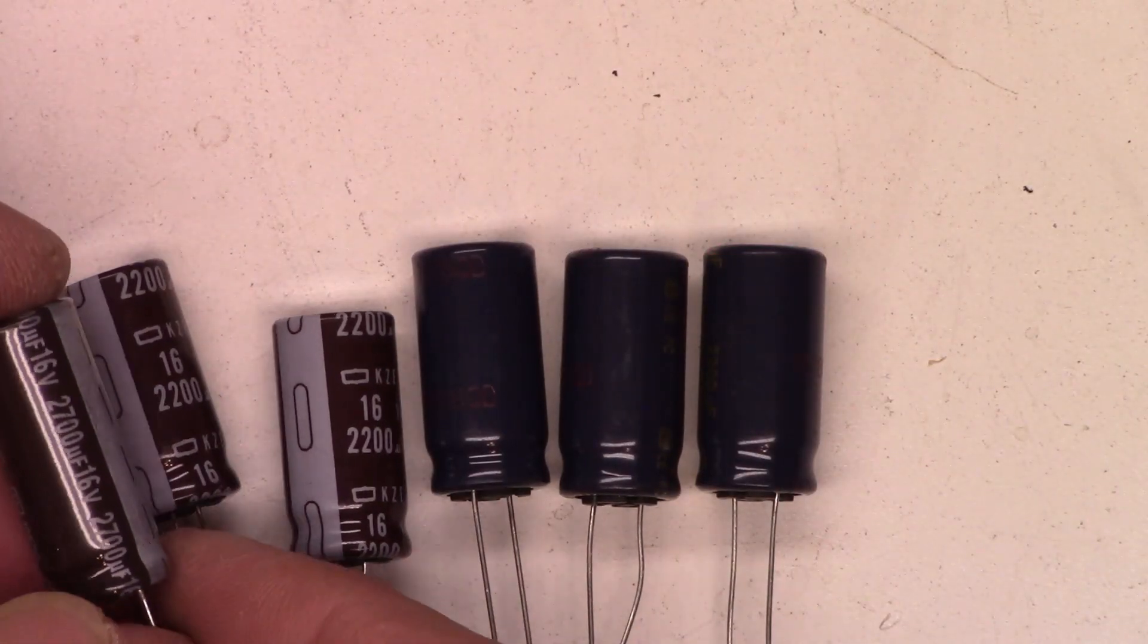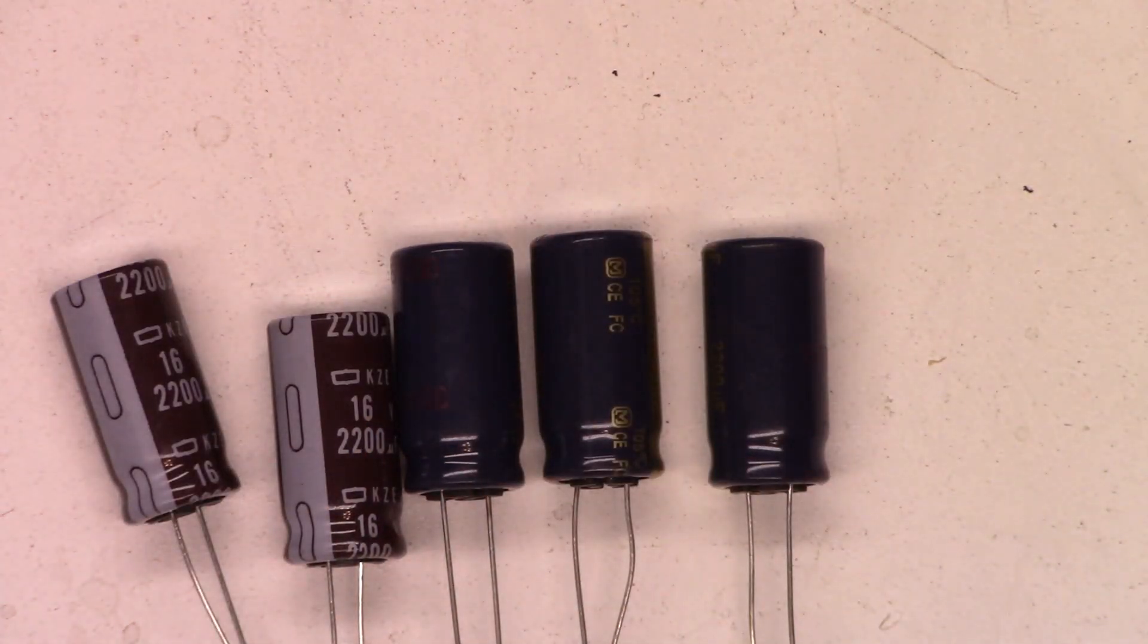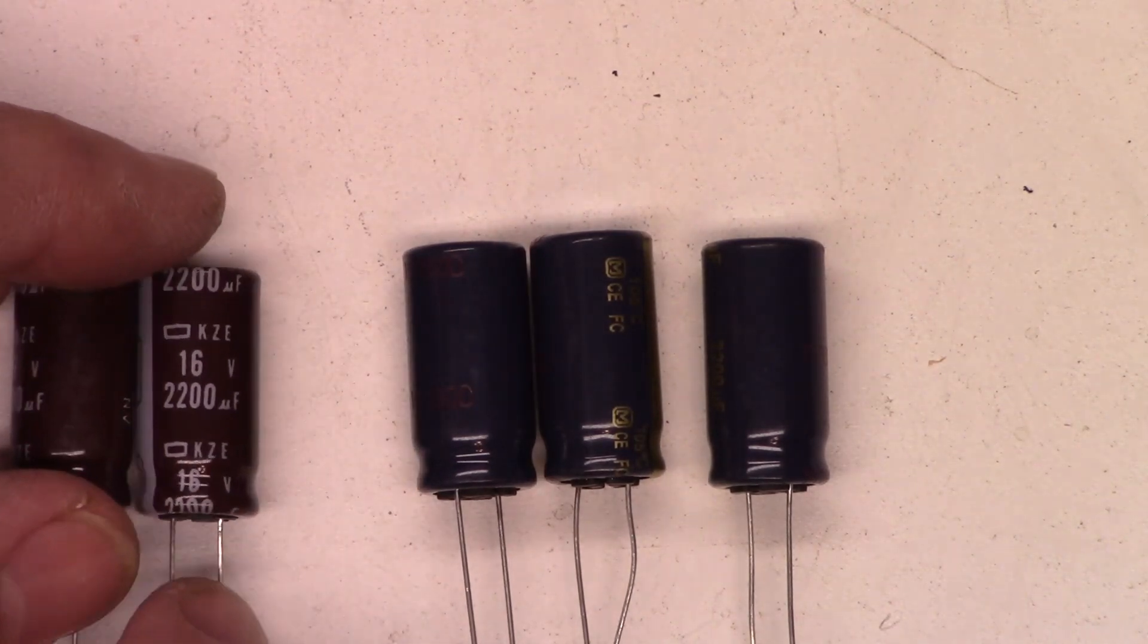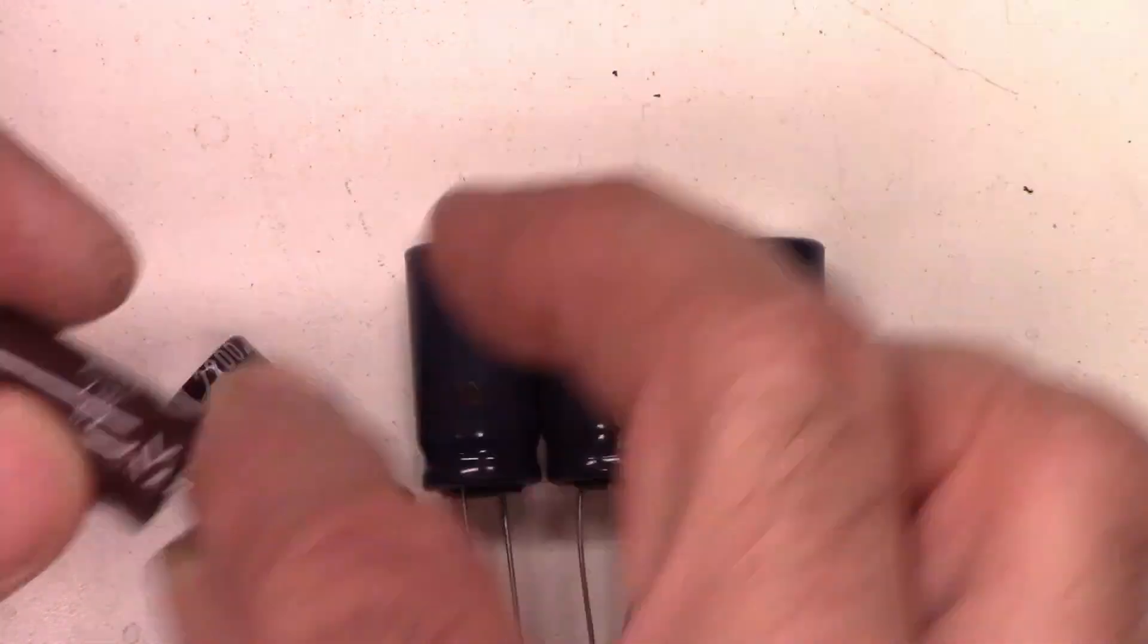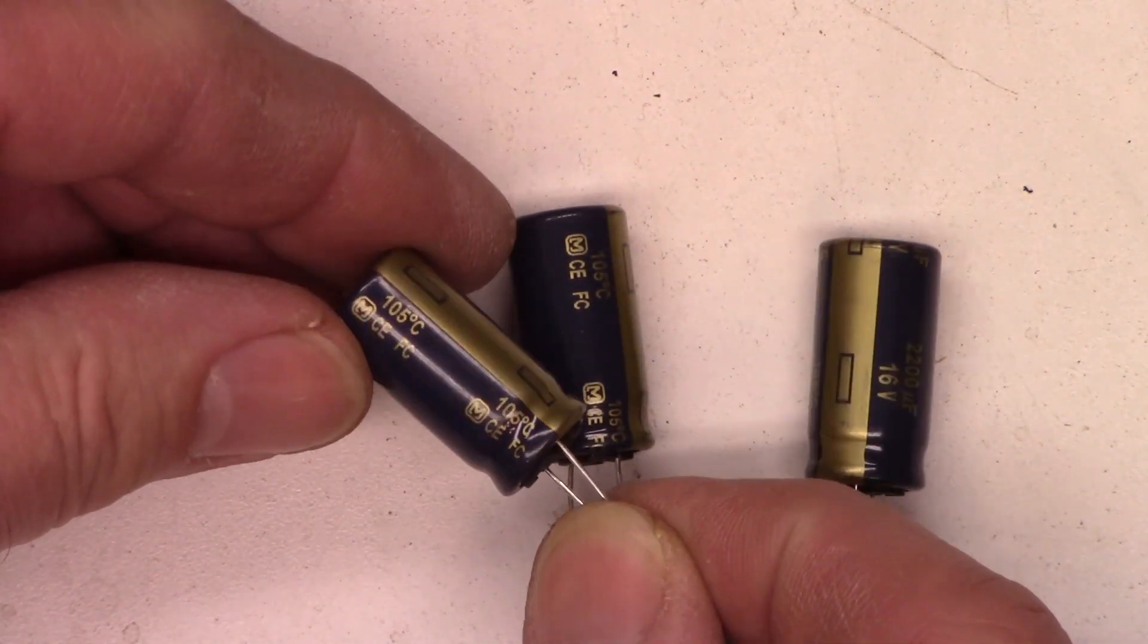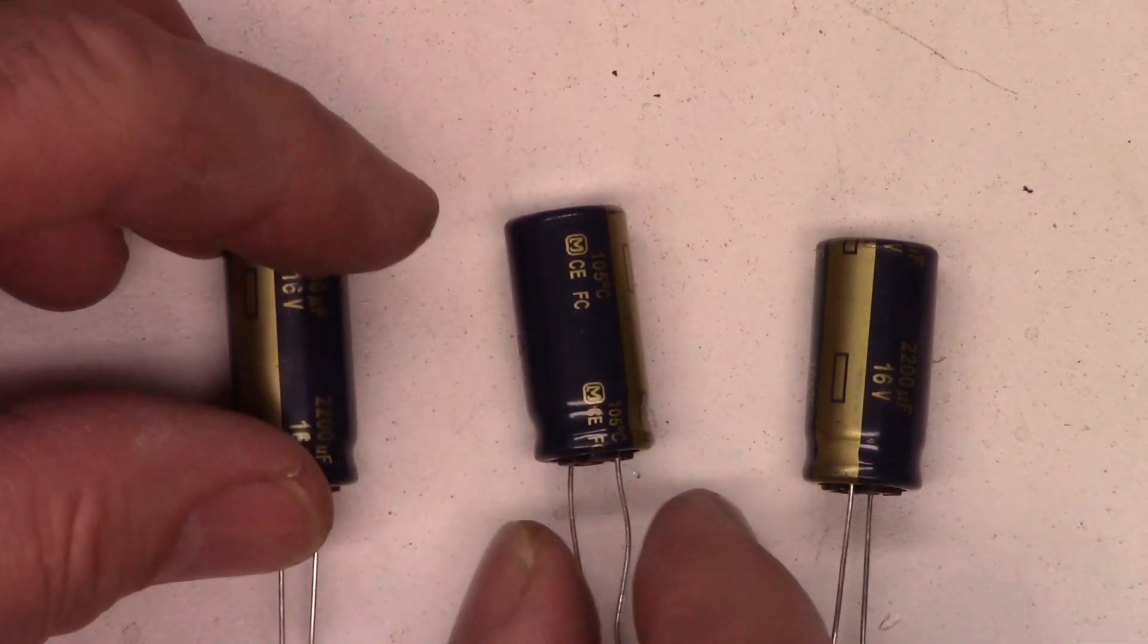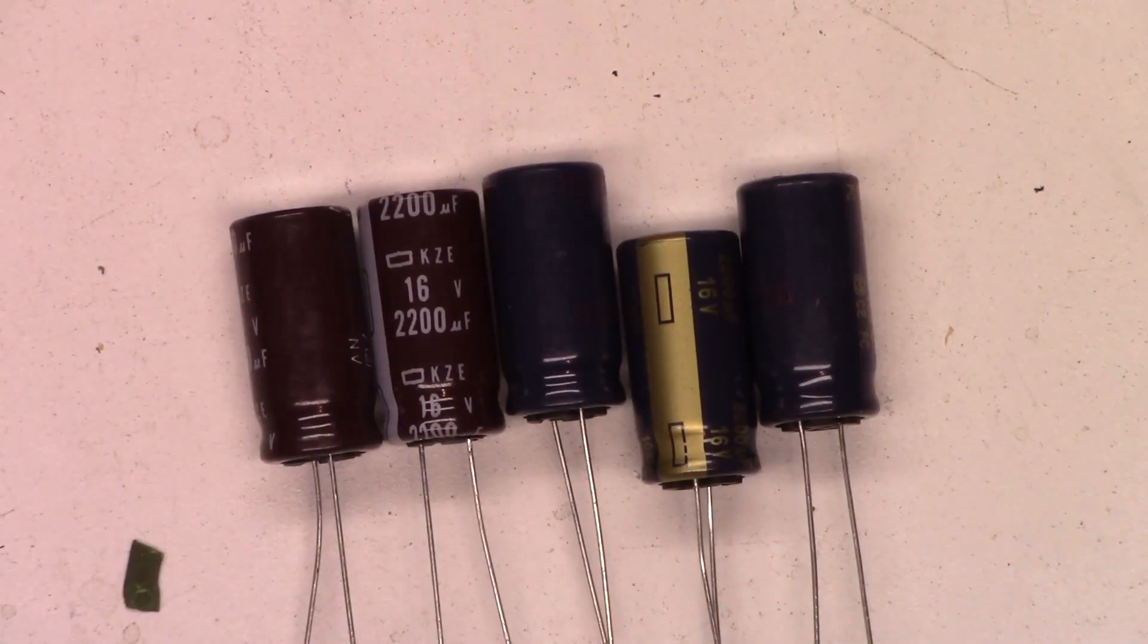The original ones were 2700 microfarad 16 volts. I don't have any 2700s. I do have a couple of 2200s at 16, Nichicons, and they are 105 Celsius rated capacitors. And then I have three more Panasonic 2200 at 16, once again 105 Celsius rated caps. We're just going to have to put these in and hope for the absolute best.